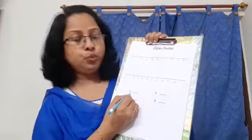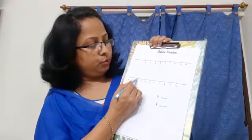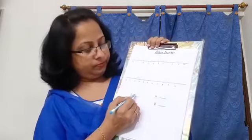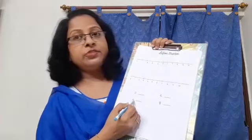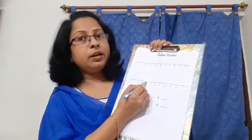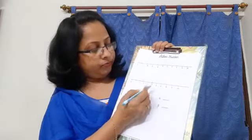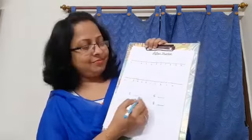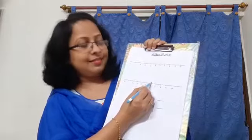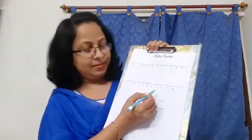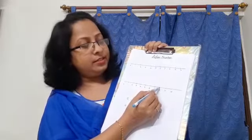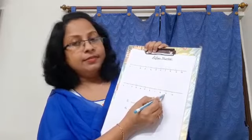What is written here? 2. What will be the after number of 2? 3. What will be the after number of 4? 5. What will be the after number of 6? 7. What will be the after number of 8? 9.